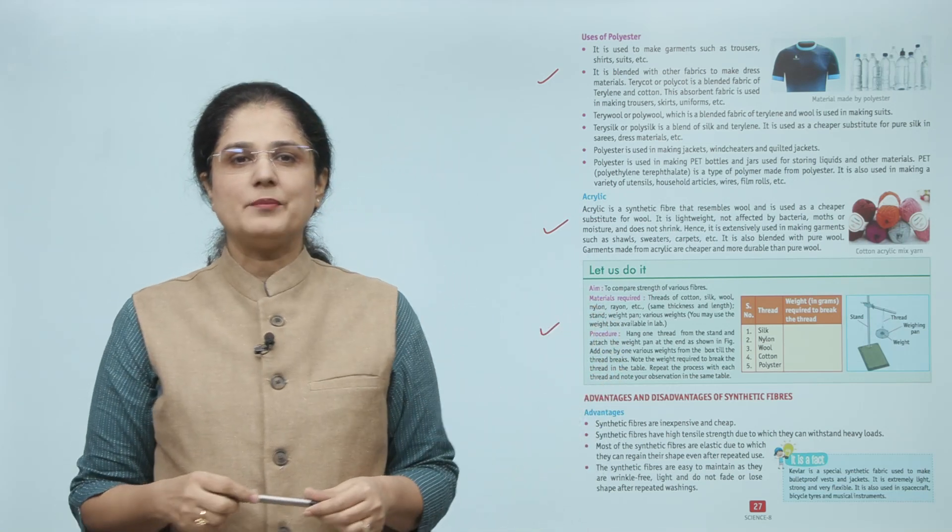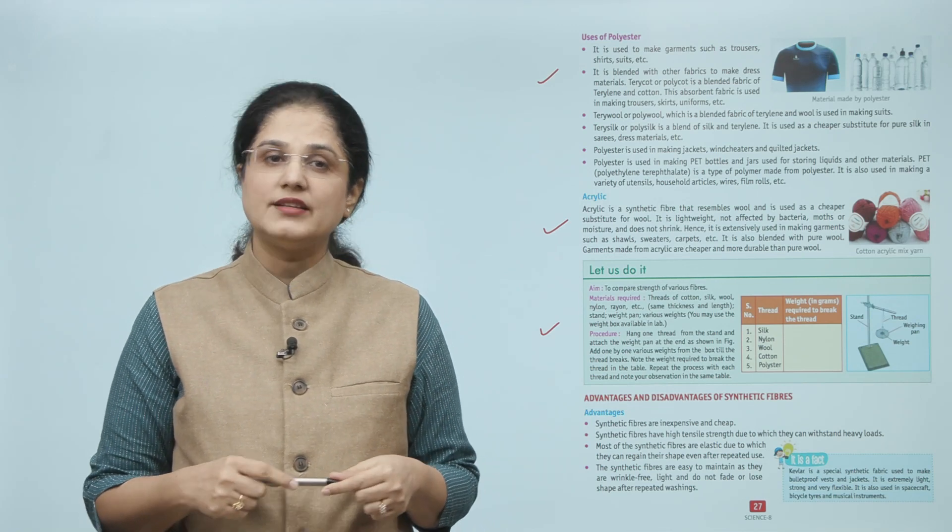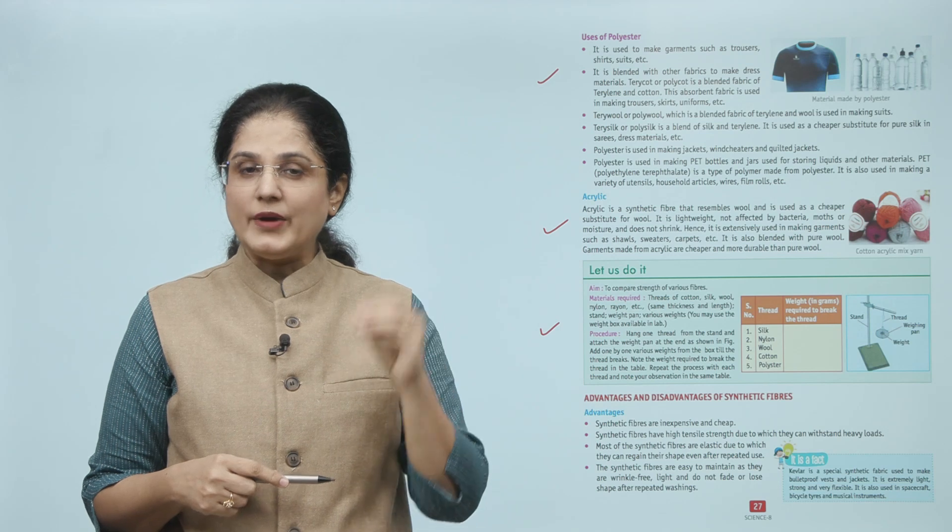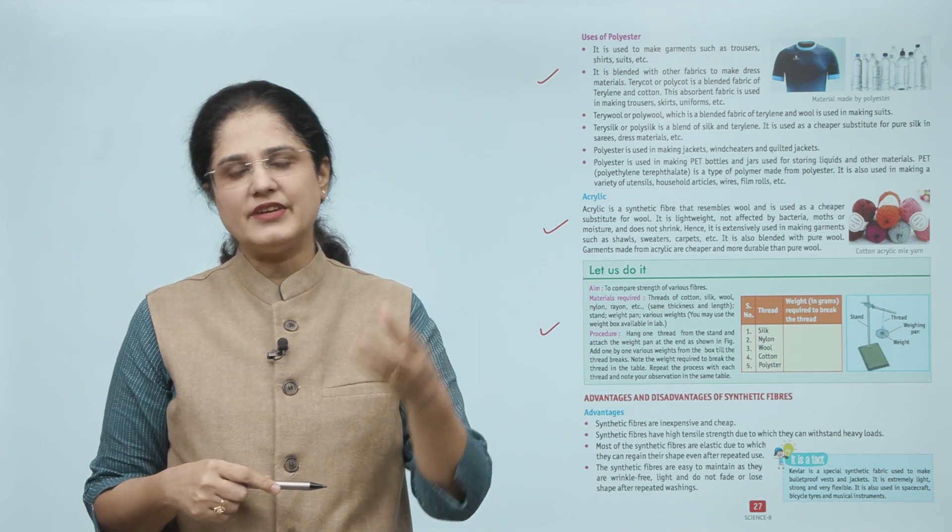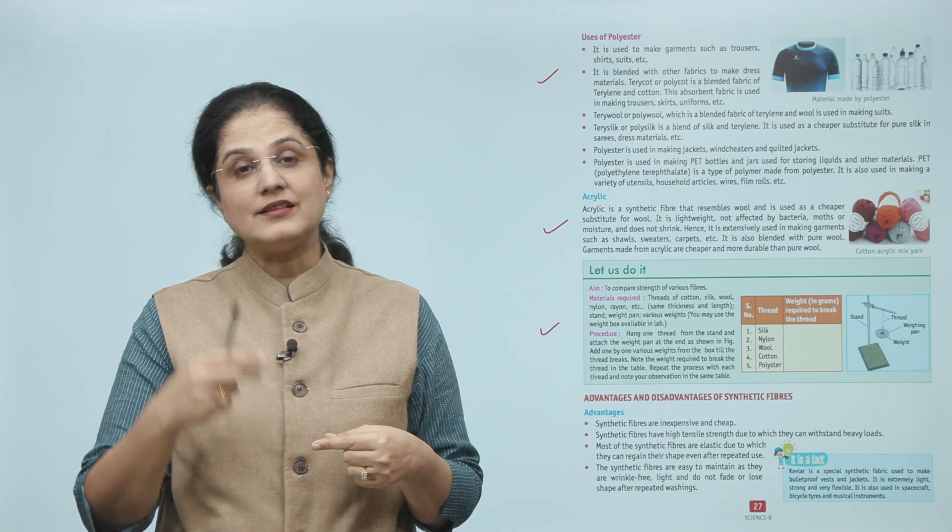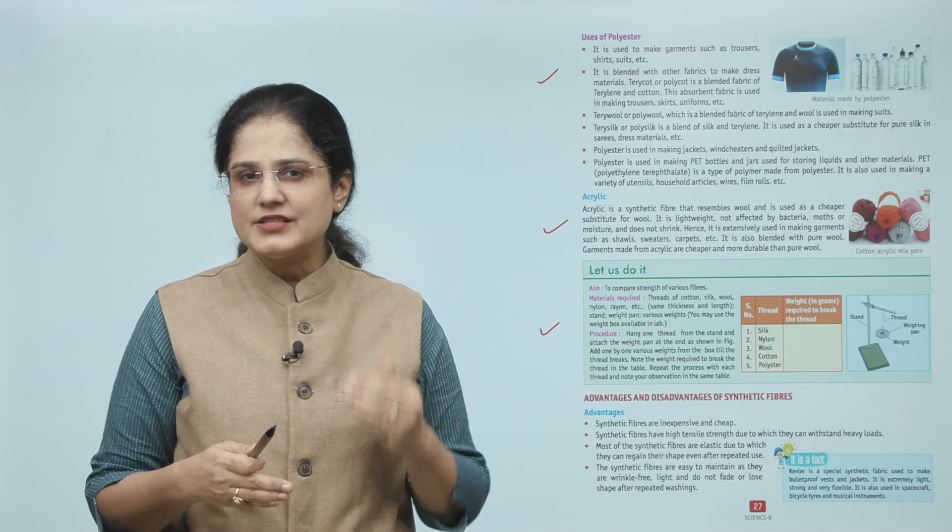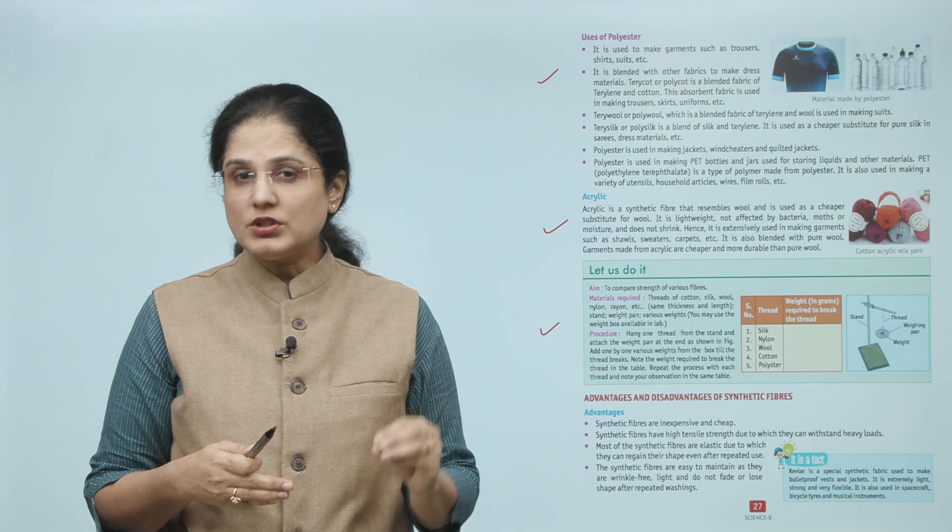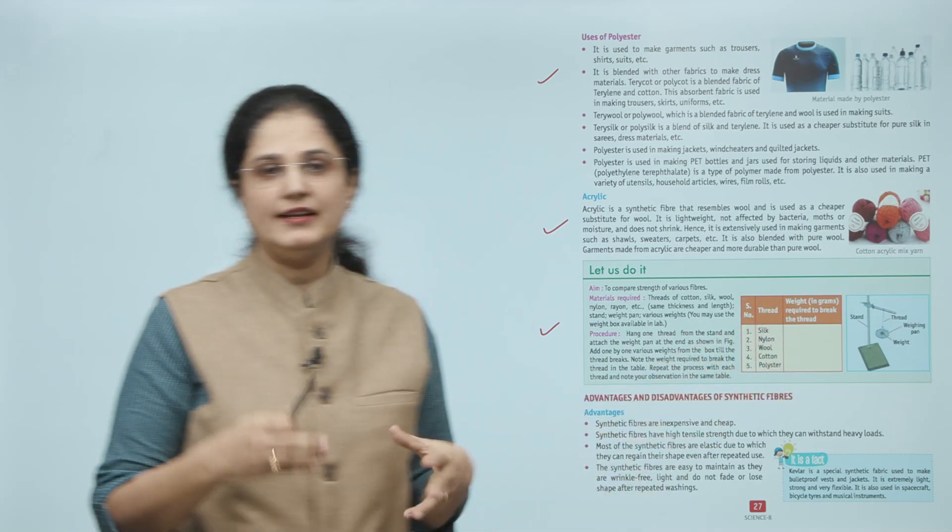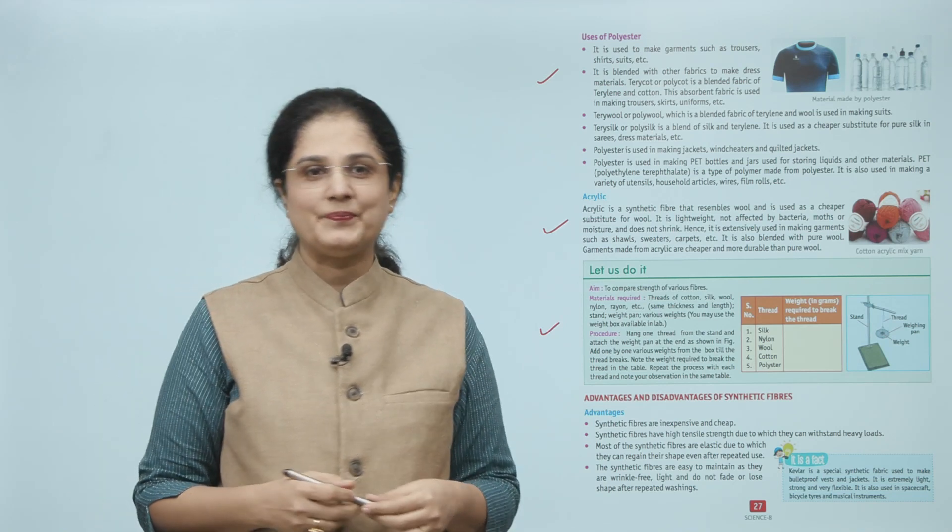Let us do an activity to compare strength of various fibers. Take threads of cotton, silk, wool, nylon, rayon of same thickness and length. You will need a stand, weight pan, and various weights from the weight box. Hang one thread from the stand and attach the weight pan at the end. Add weights one by one till the thread breaks. Note the weight required to break the thread in the table. Repeat the process with each thread and note your observations.